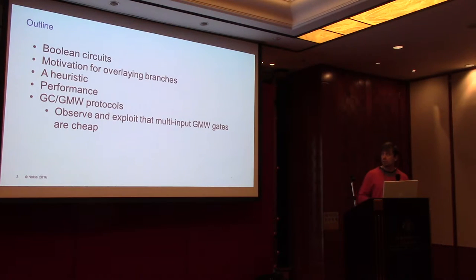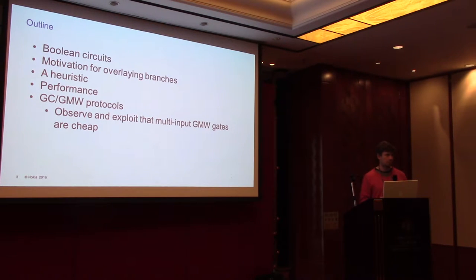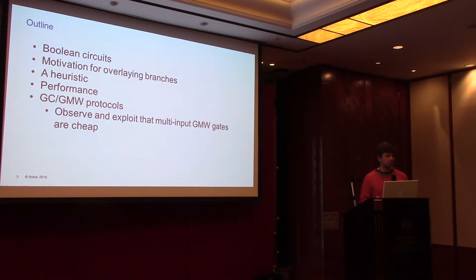I'll talk about boolean circuits, why we're using them, and their limitations. This will lead to the motivation of step two: universal circuits, or overlying conditional branches. I'll propose a heuristic, discuss performance, and then discuss how this can be used. We need to custom design the evaluation protocol, because naive things don't directly work.